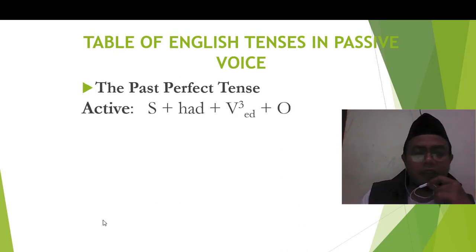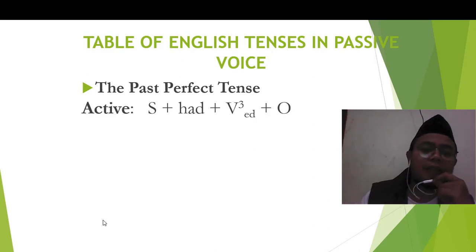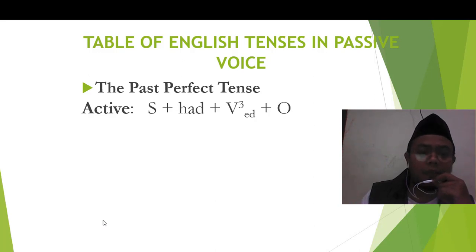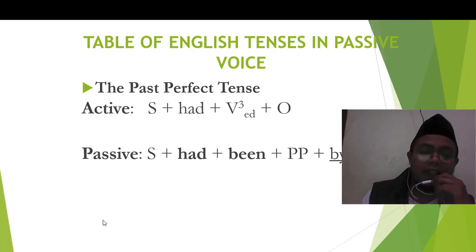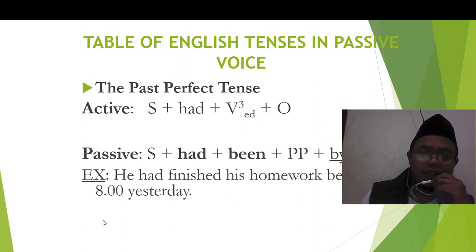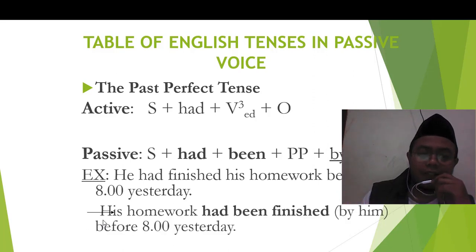What about past perfect tense? Ini sama saja dengan present perfect tense dari segi pola. Yang berbeda hanya penggunaan have dan has — in past perfect tense, we use 'had' instead of have and has. Subject plus had plus been — jadi pasti had been. Pasti menggunakan been, entah itu have, has, atau had, tergantung tense-nya. Look at this: He had finished his homework. It becomes: His homework had been finished.